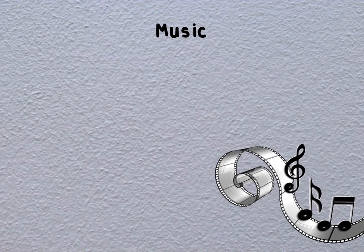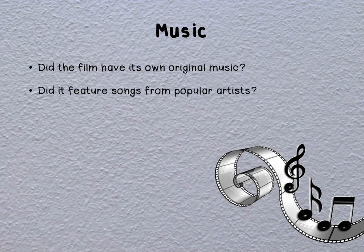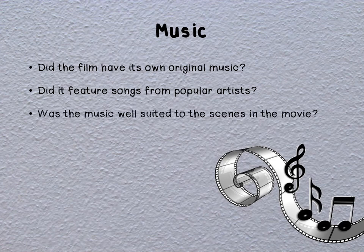Films generally include a soundtrack or music paired with what we see on screen. Your answers to the following questions can be included in your film review. Did the film have its own original music — was the soundtrack composed specifically for the film? Or did it feature songs from popular artists that already exist and have been included in the film? Whether your chosen film included pre-existing songs or songs specifically composed for it, ask yourself if the music was well suited to the scenes in the movie. Don't forget to state why or why not you think so.